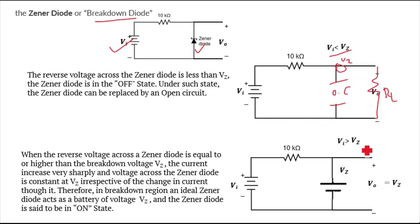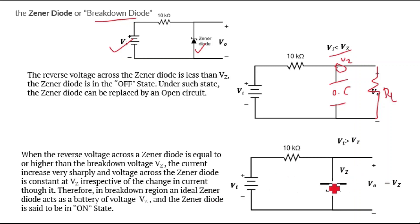When VI is greater than or equal to VZ, the Zener diode enters breakdown. The current increases very sharply, but the voltage across the Zener diode remains constant at VZ regardless of how much current flows through it. Even as current keeps increasing, VZ does not change.